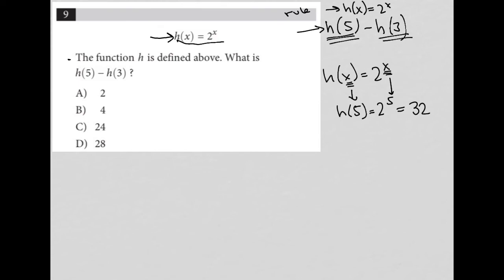We do the same thing for h(3). h(x) = 2^x, but h(3) just replaces that x with 3. And 2^3 = 8. Because we're finding h(5) - h(3),